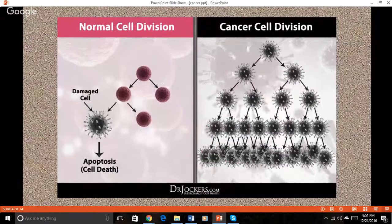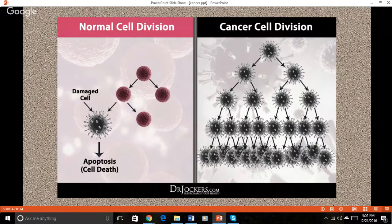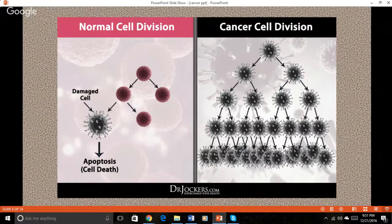This slide shows the difference between cancer cell division and normal cell division. The process of copying our DNA and making a new cell is a very highly regulated process. However, there are multiple factors that can interfere with our body's ability to replicate DNA accurately and recognize damaged cells. Some of the most prominent triggering mechanisms behind cancer development include poor activation of antioxidant defense systems — this is one of the most common that I see in testing.